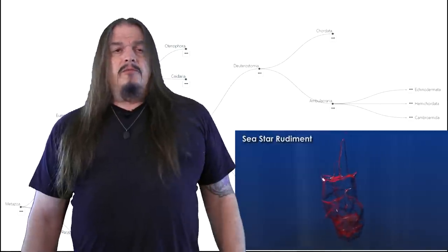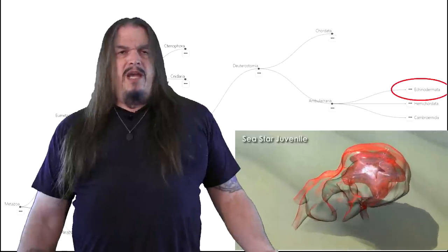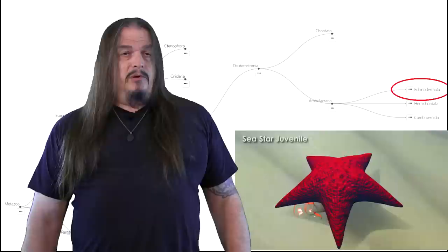Likewise, back in deuterostomes we saw that echinoderms started out as bilaterally symmetrical animals but then something happens in their development that seems to change their symmetry or at least their polarity.